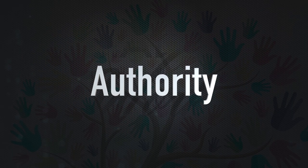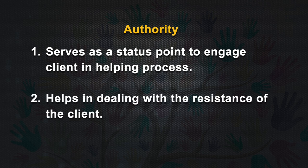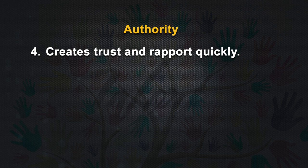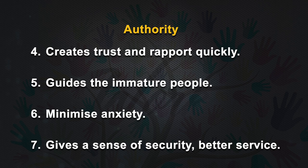The next concept is authority. When the client's ego functioning is poor, the worker plays a protective kind of role. The society has given power of authority to the worker. Power indicates the inherent ability of the worker because of knowledge, experience and the agency's status. This authority influences the client to move towards the goal of change and development. The authority serves to engage the client in the helping process, helps in dealing with the client's resistance, gives the support of an adequate person, creates trust and rapport quickly, guides immature people, minimizes anxiety, and gives a sense of security and better service.